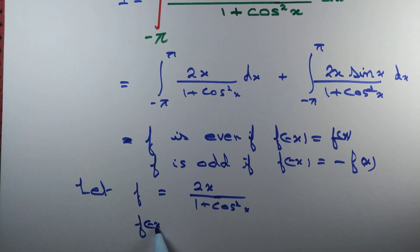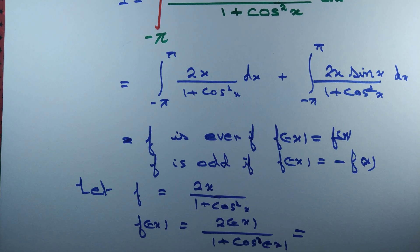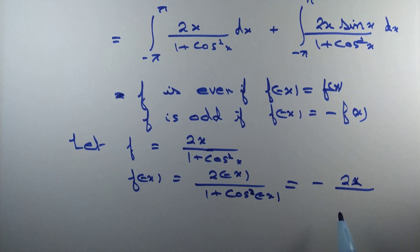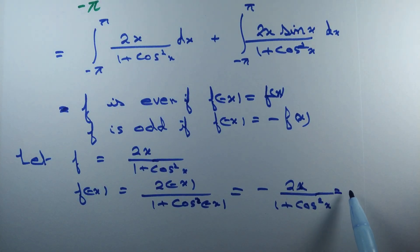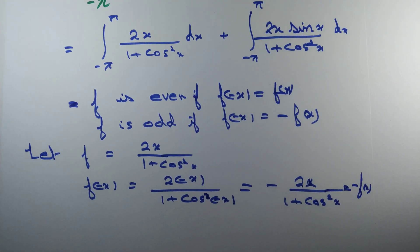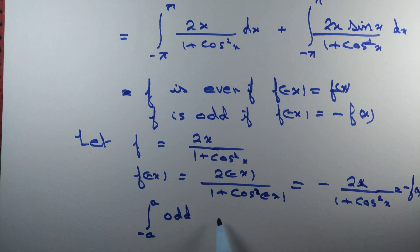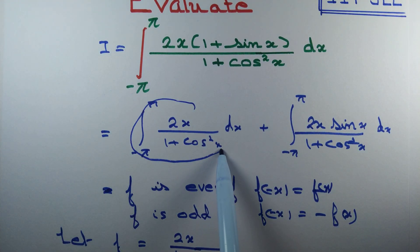Then f(−x) = 2(−x) divided by (1 + cos squared(−x)), which can be written as −2x divided by (1 + cos squared x), because cos(−θ) equals cos θ. So f(−x) = −f(x), meaning f is odd. We know that the integral from −a to a of any odd function is 0. So this first integral is simply 0.